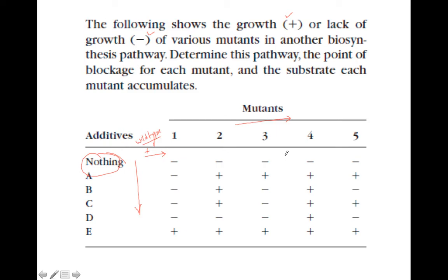Now how to find out which substrate is the final product? It's simple: if we provide that particular substrate and all the mutants grow — like in this case you can see E: 1, 2, 3, 4, 5 — all of them are growing, which means E is the last in the pathway.